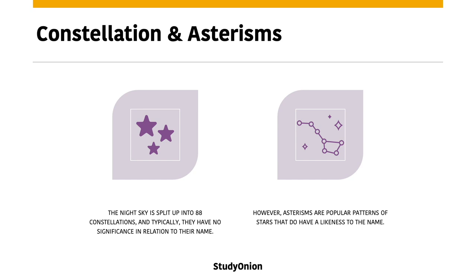A constellation is a defined region in the sky, which is typically named after an asterism that it contains. Whereas an asterism is an unofficial popular pattern of stars that do have a close likeness to their names. The stars in an asterism might belong to the same constellation, or they can belong to different constellations.